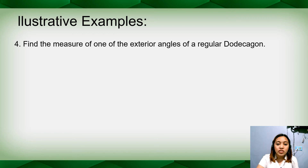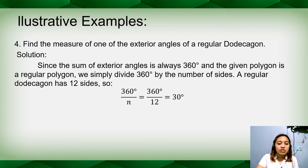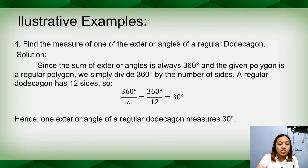Last example: find the measure of one exterior angle of a regular dodecagon. Since all angles are equal in a regular polygon and a dodecagon has 12 sides, we simply divide 360 degrees by the number of sides: 360 ÷ 12 = 30 degrees. Hence, one exterior angle of a regular dodecagon measures 30 degrees.